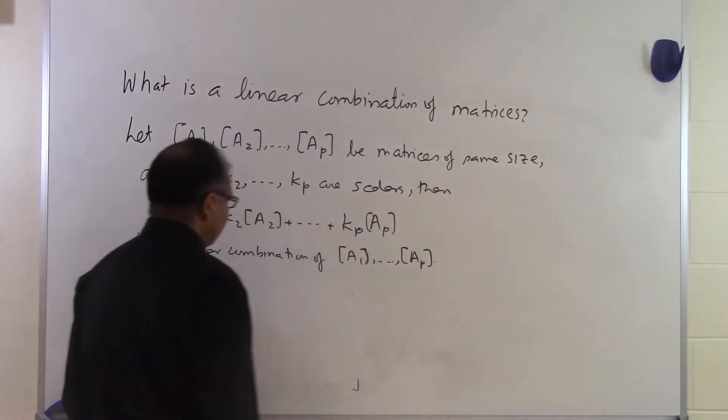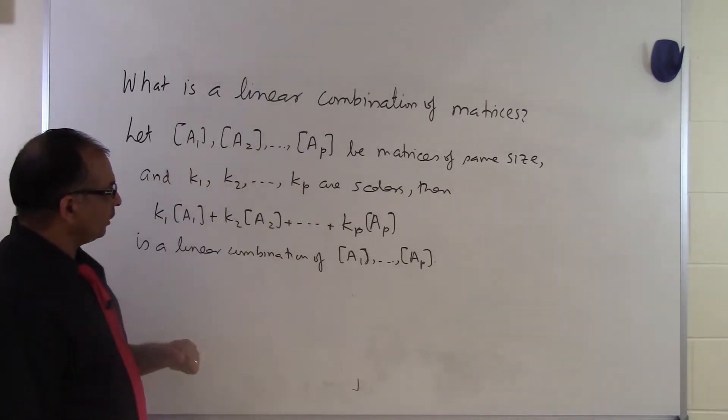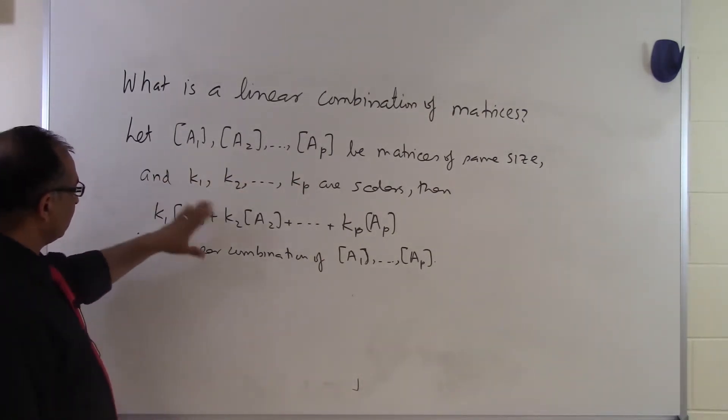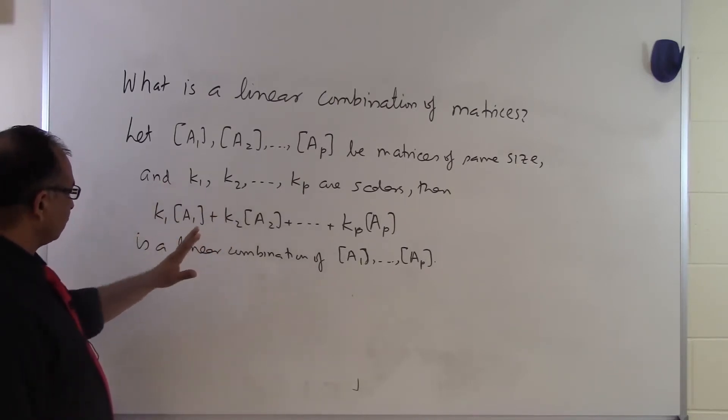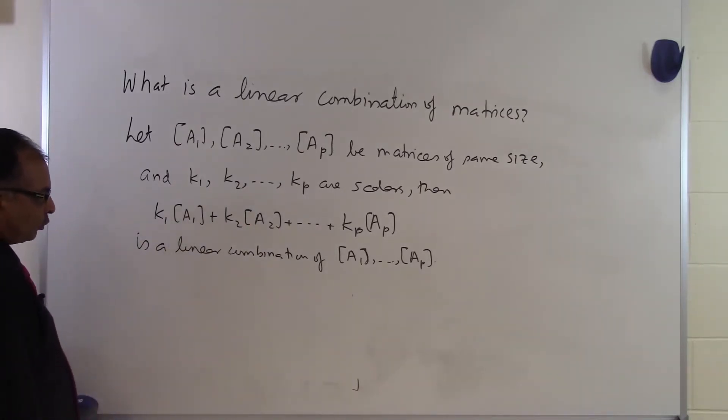So that's how we define the linear combination of matrices. So somebody gives us P matrices A1, A2, all the way AP and wants to find a linear combination of those. Then we can take any values of K1 through Kp and if we add them all up that becomes a linear combination of those matrices. This concept is important in solving simultaneous linear equations in other places.